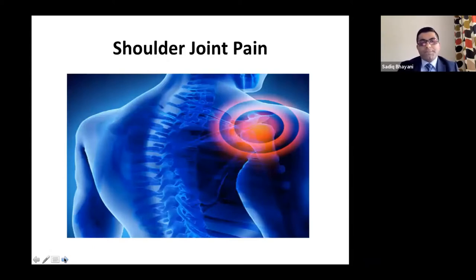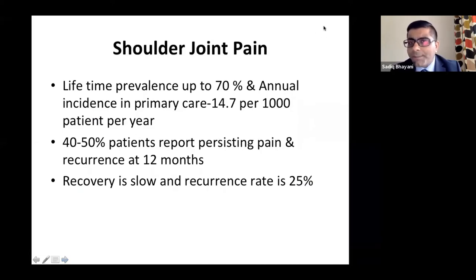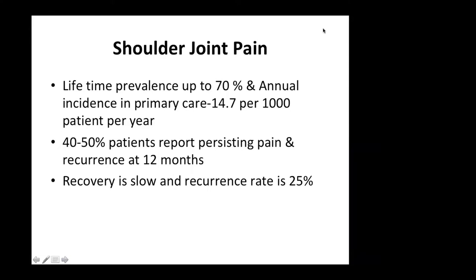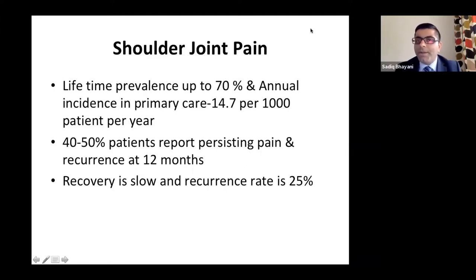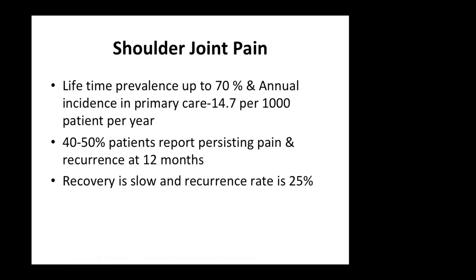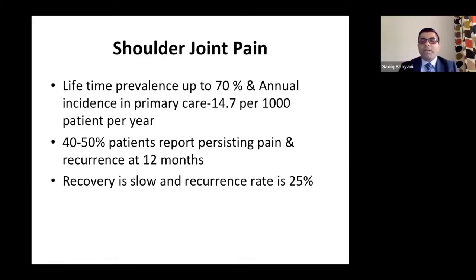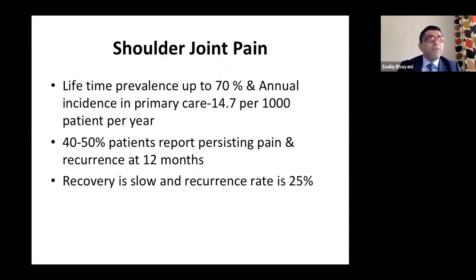Shoulder pain: lifetime prevalence is about 70%, annual incidence is about 14.7 per 1,000 patients per year. About 40 to 50% of patients report persisting pain — if you've had a shoulder pain problem, about 50% will say the pain is still there, with possible recurrence or exacerbation at 12 months. Recovery from shoulder pain is slow, with a recurrence rate of about 25%.